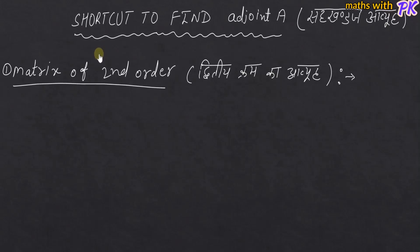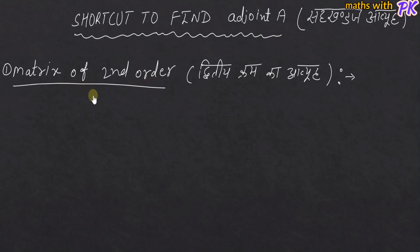Hello everyone, I am Svip Diki and welcome to this video. We are going to start Adjoint A for a second-order matrix view. First, we are going to talk about second order matrix and third order matrix.